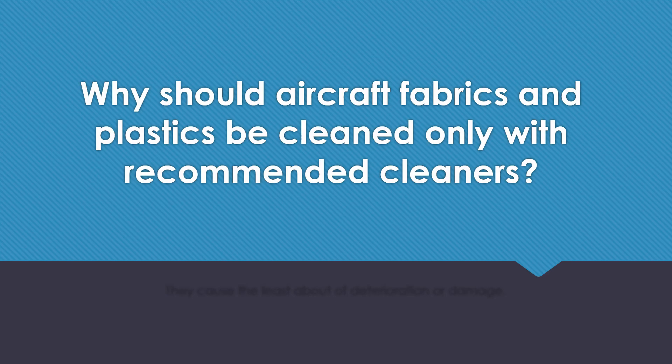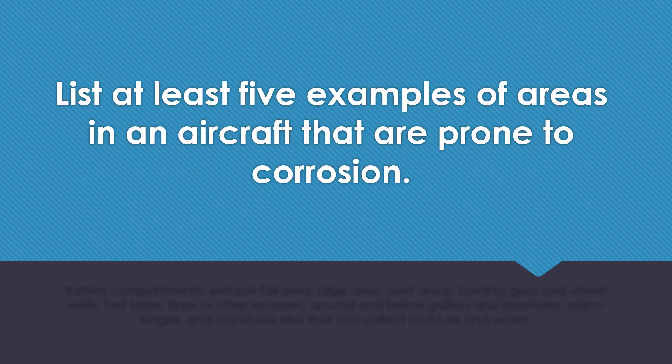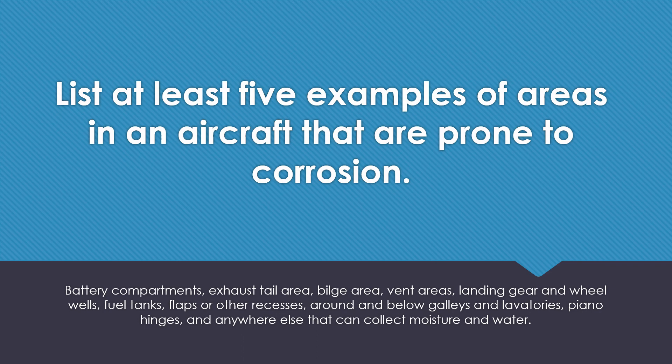Why should aircraft fabrics and plastics be cleaned with only recommended cleaners? They cause the least amount of deterioration or damage. List at least five examples of areas in an aircraft that are prone to corrosion: battery compartments, exhaust tail area, bilge area, vent areas, landing gear and wheel wells, fuel tanks, flaps and other recesses, around and below the galleys and lavatories, piano hinges, and anywhere else that could collect moisture and water.